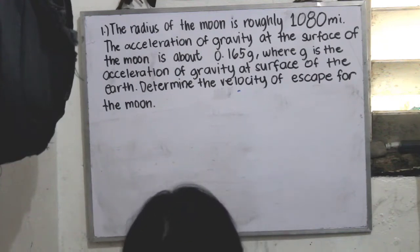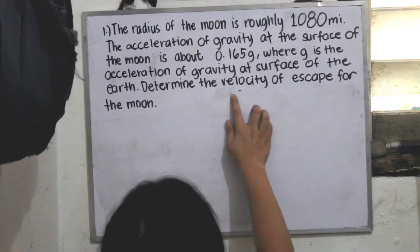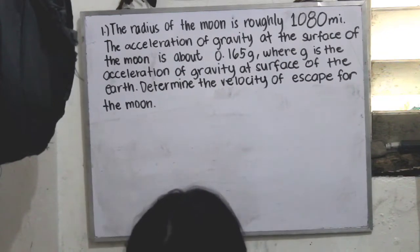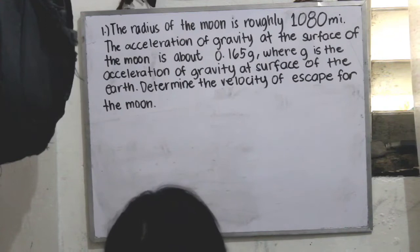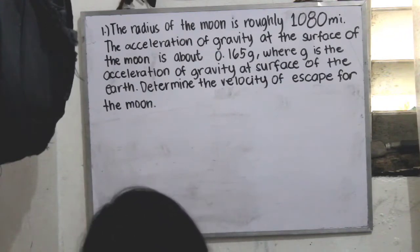The radius of the moon is roughly 1080 miles and the acceleration of gravity at the surface of the moon is about 0.165 g, where g is the acceleration of gravity at the surface of the earth. Determine the velocity of escape for the moon.